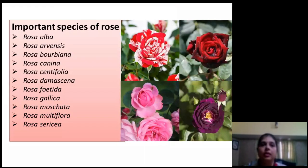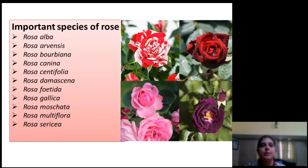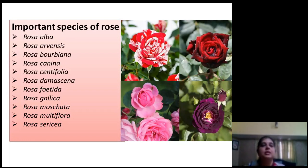The important species of rose: there are about 300 species of rose, of which the main species are Rosa Alba, Borbiana, Canina, Centifolia, Damaceana, Fetida, Gallica, Moscata, Multiflora, and Ceresia.